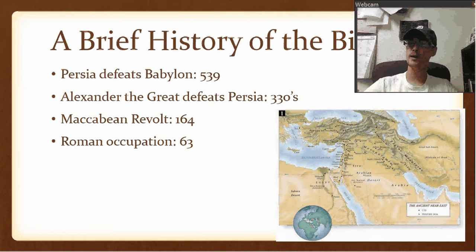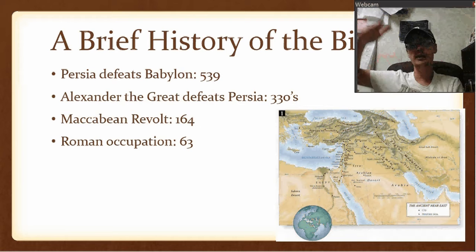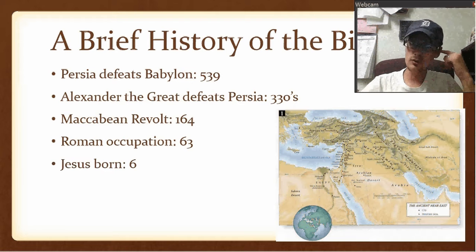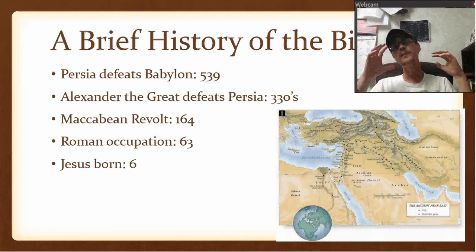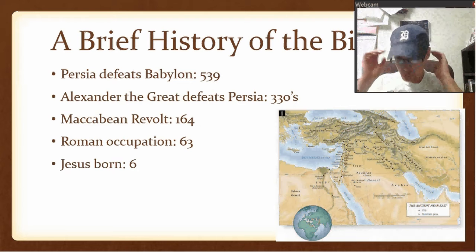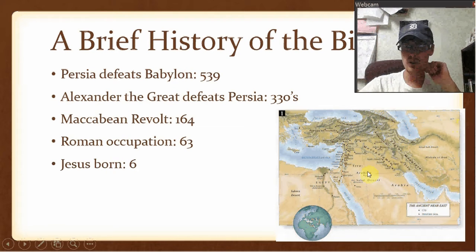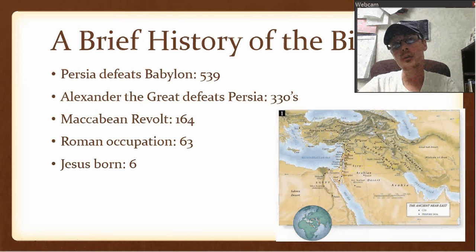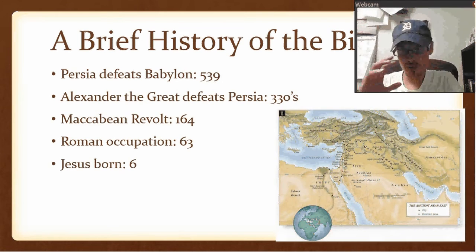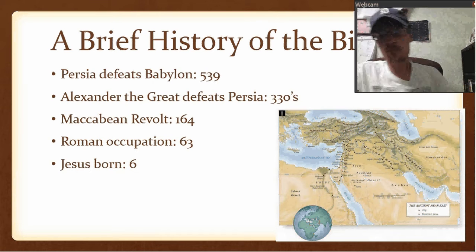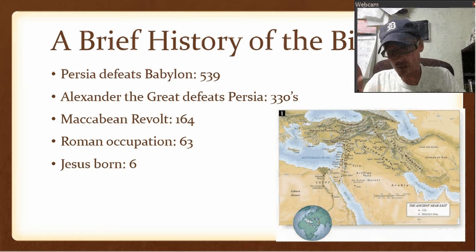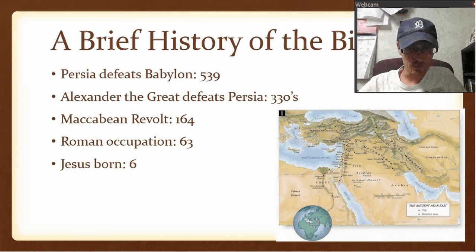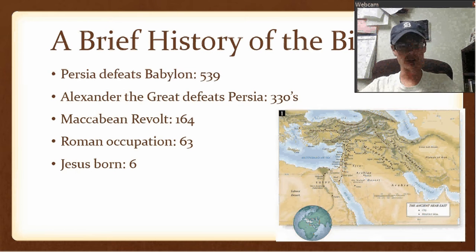The Roman occupation is where the Gospels pick up with Jesus. Rome has control and has placed Herod the Great as king over the area. Herod hears about Jesus being born around 6 BC and, threatened by his power, kills all the young children in that town. Jesus is safely in Egypt at this point. After Herod the Great dies around 4 BC, they move back.